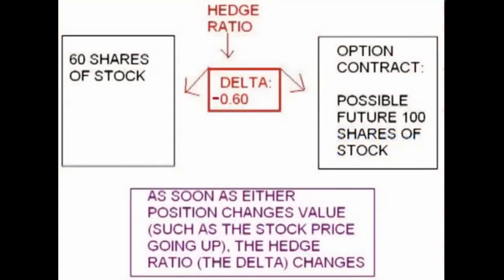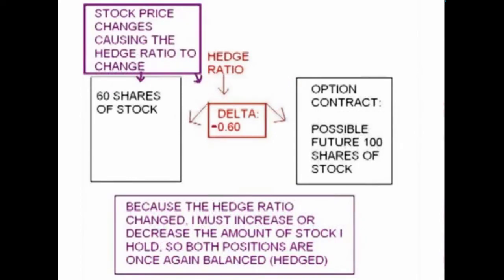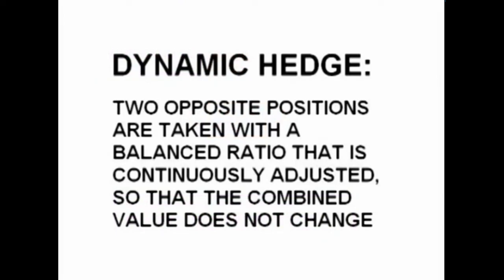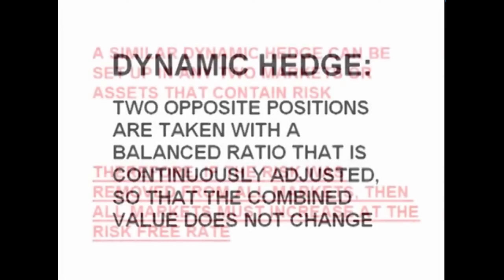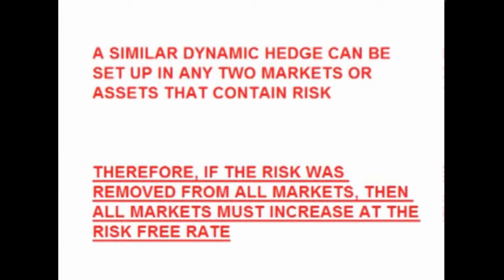As a stock goes up and down in value, the delta increases and decreases. This means that once the stock price moves, a once-hedged position is no longer completely hedged. To maintain a hedge, the ratio of option contracts to shares of stock must be readjusted by increasing or decreasing the amount of shares or option contracts so that the hedge ratio is once again balanced. Delta hedging was one of the keys to the Black-Scholes formula — the theory was that if one can theoretically continue to keep readjusting the ratio of option contracts to shares of stock on a continuous basis, then one could be constantly hedged and theoretically remove all risk of loss.